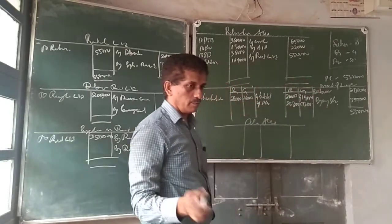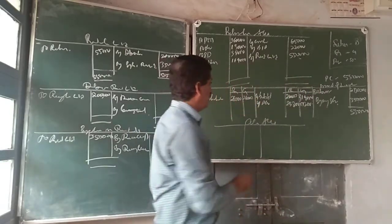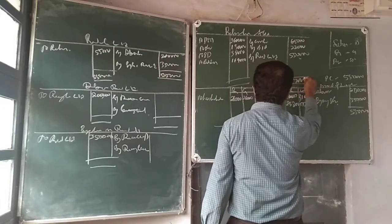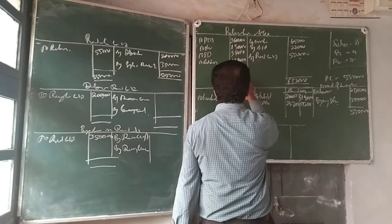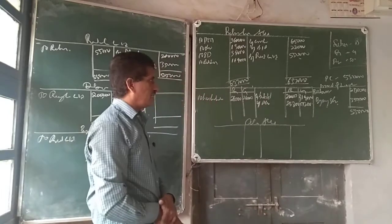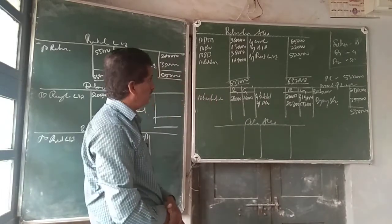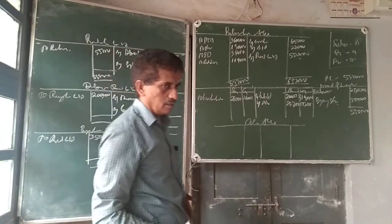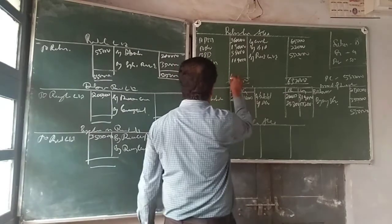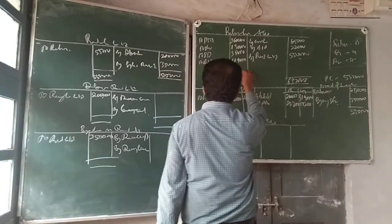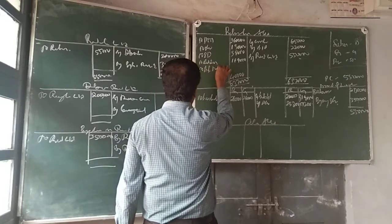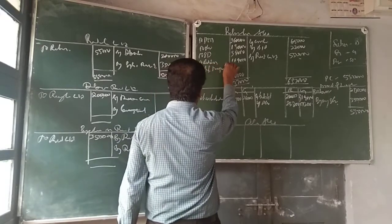How much is the total? 6 lakh 37,000. The balance figure you are going to get is 6 lakh 37,000. Balance figure is 40,000. Profit transfer to partners' capital account.